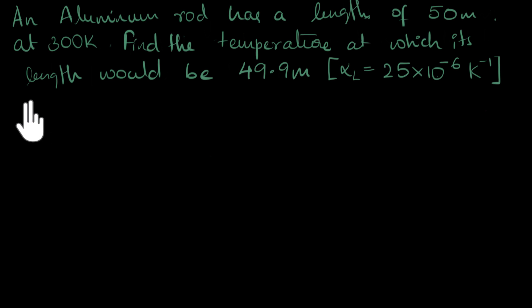Alright, let's solve this. Let's first write down what's given to us. We know that the length of the rod, the length of the aluminum rod is 50 meters. Here, 50 meters, and the temperature right now, the temperature right now is 300 Kelvin.